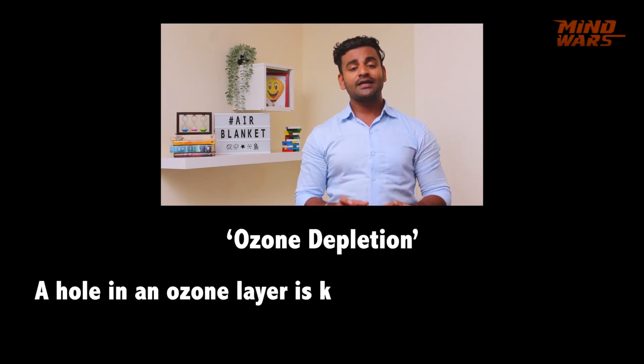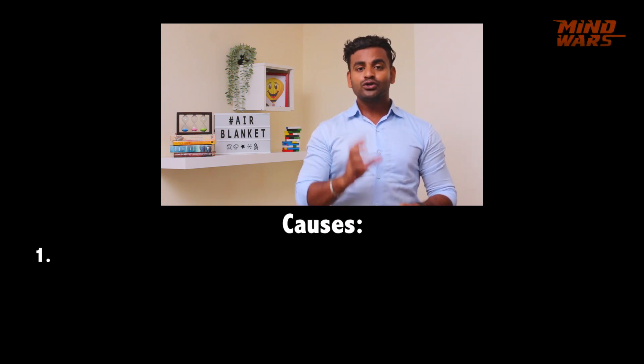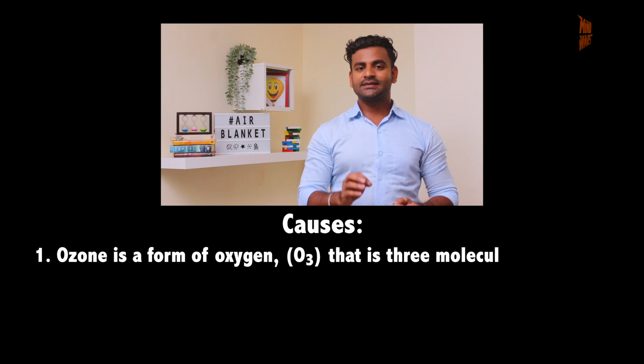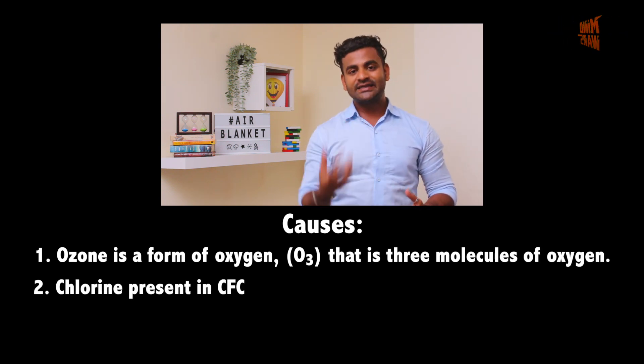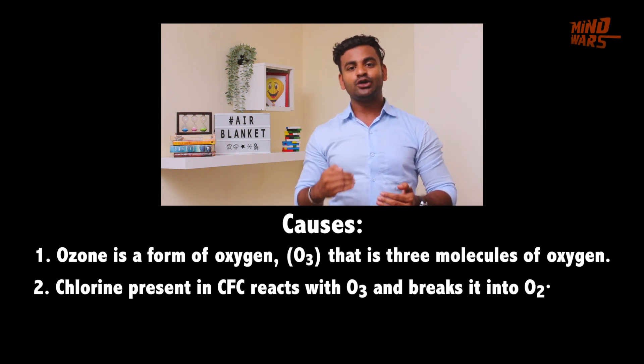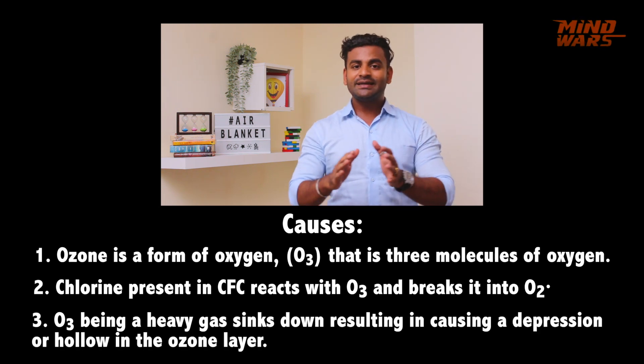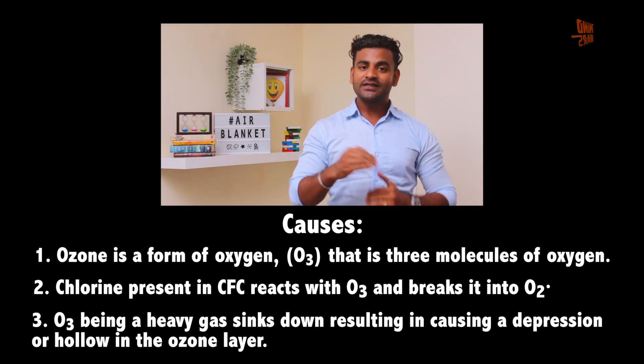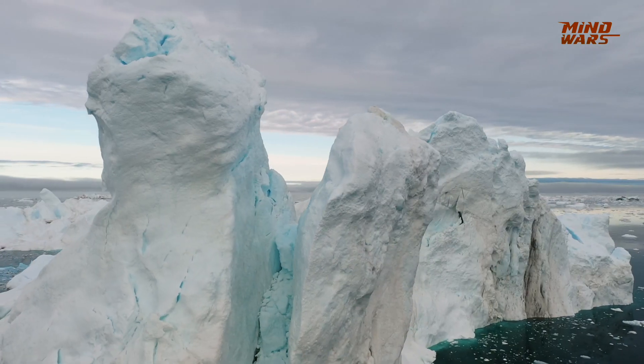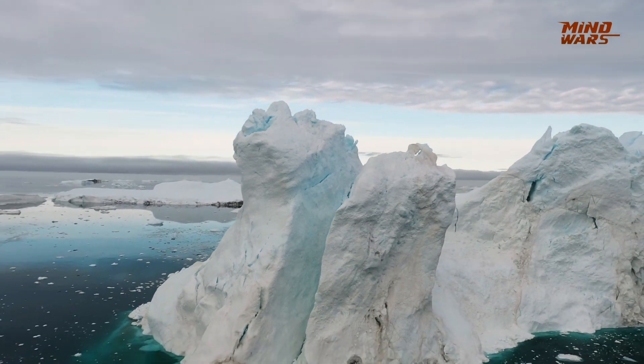A hole in the ozone layer is known as ozone depression. Ozone is a form of oxygen — O3, three molecules of oxygen. Chlorine present in CFCs reacts with O3 and breaks it into O2. O3, being a heavy gas, sinks down and causes a depression or hollow in the ozone layer. It was first discovered in Antarctica. Scientists go to the Antarctic region for study and research, and to keep warm throughout the year they make use of diesel and petrol, which causes heavy pollution and in turn creates ozone depletion.